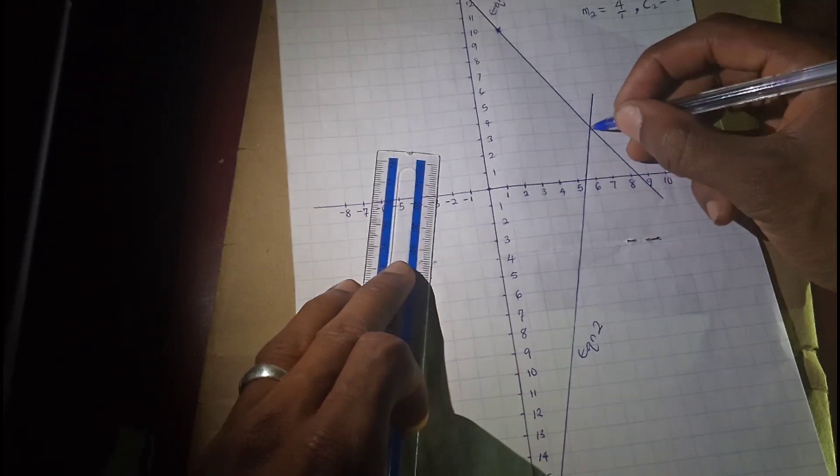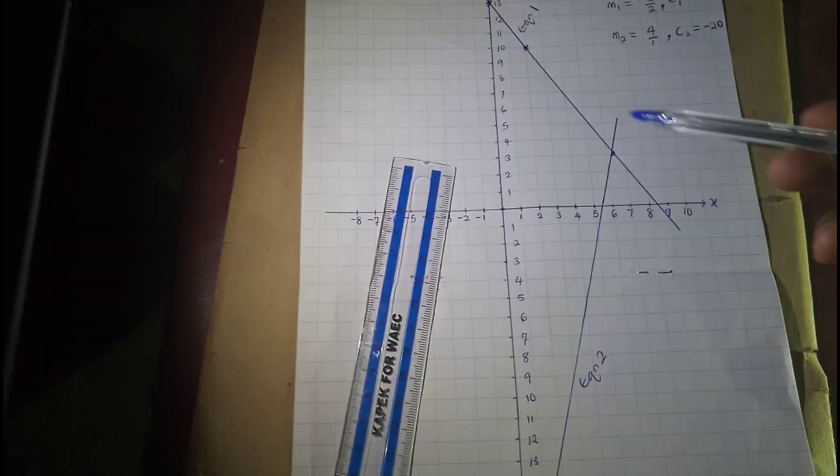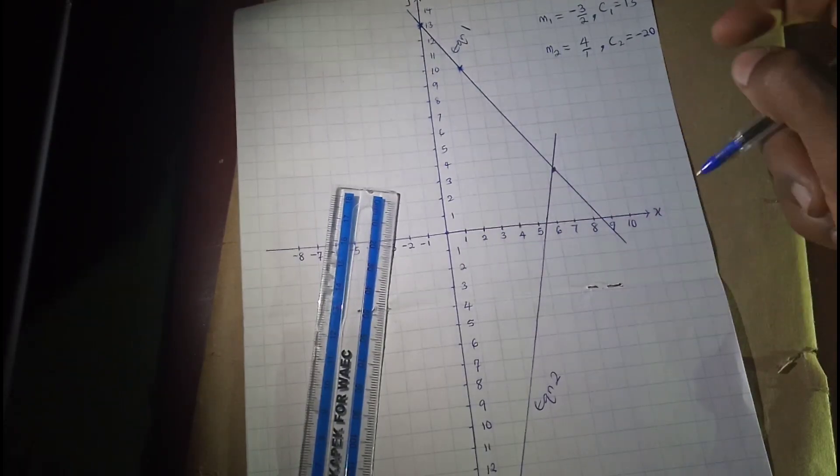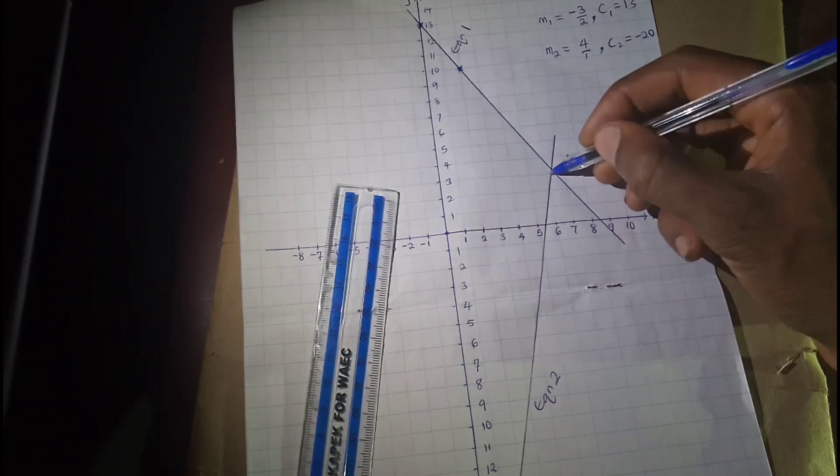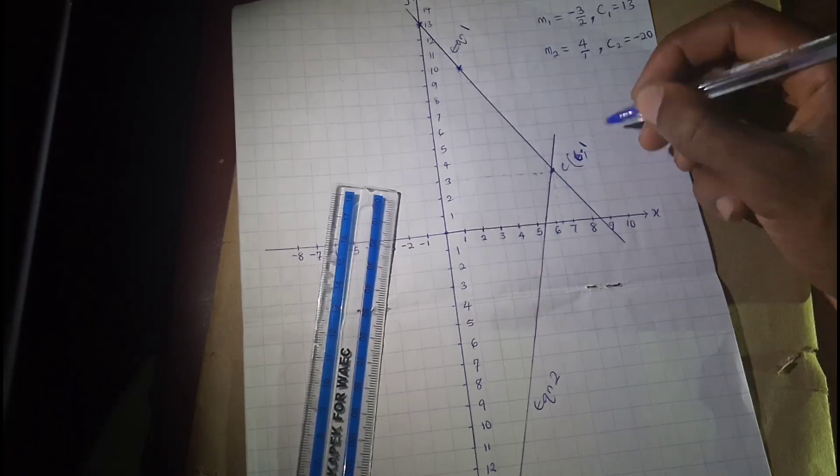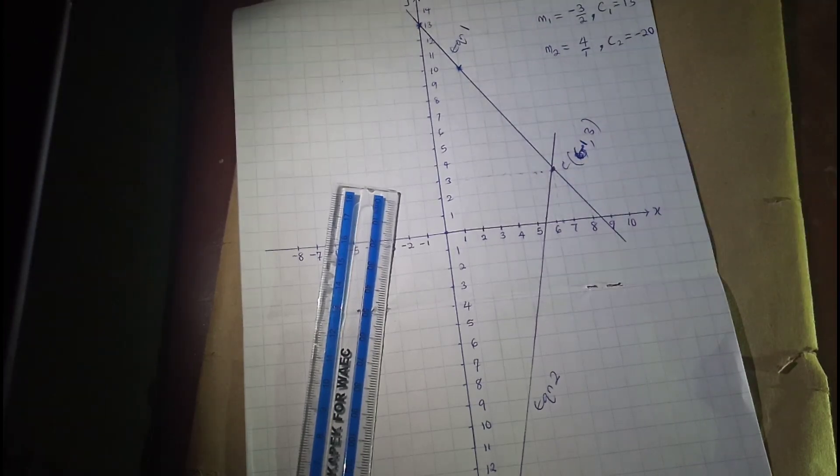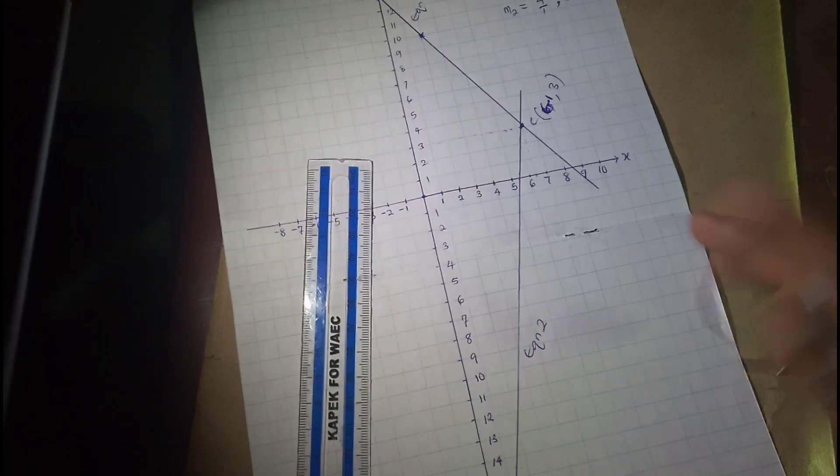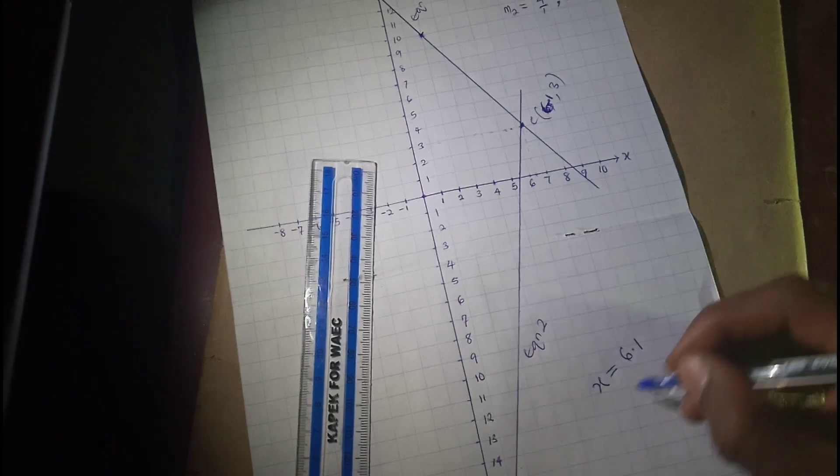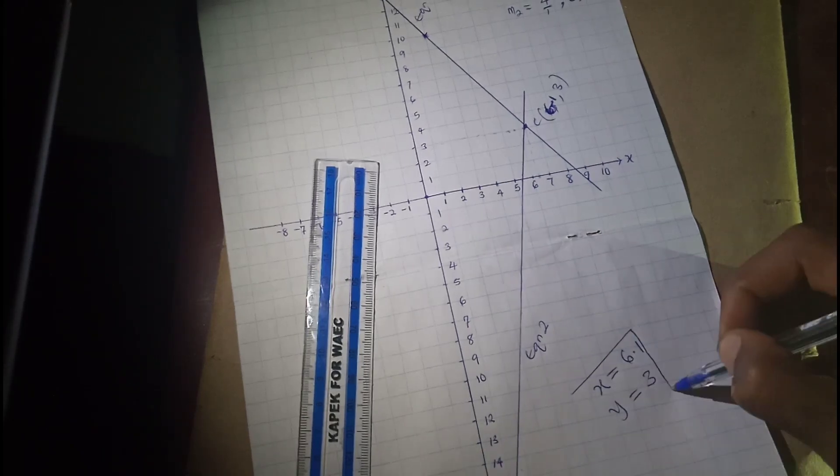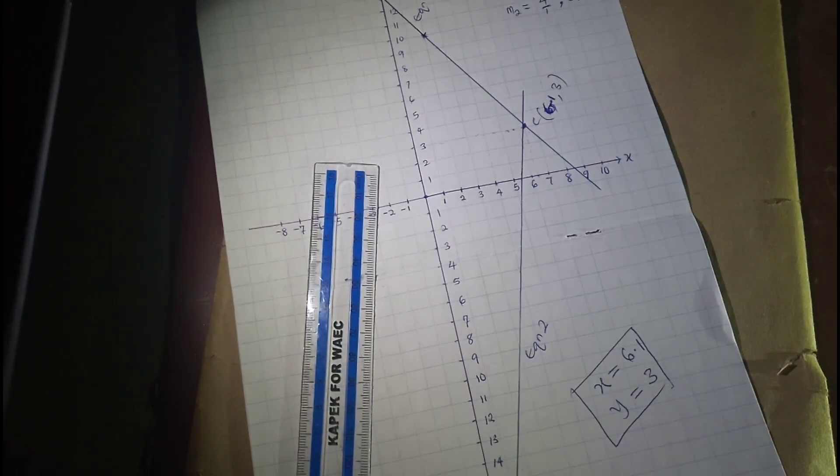So the coordinate here, it must not be perfect, but approximately equal to. So the solution, the solutions are x equals to 6.1, y equals to 3. So this is the solution to this graph and is the solution to the simultaneous equations given to us initially.